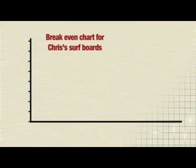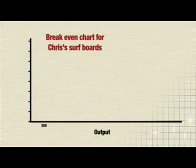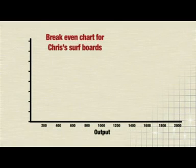So, first of all, you give the chart a title — we could call it 'Break Even Chart for Chris's Surfboards.' Next, plot the output on the horizontal axis, going up to 2,000. Then do the vertical axis for costs, revenues, or profits, going up to £400,000.